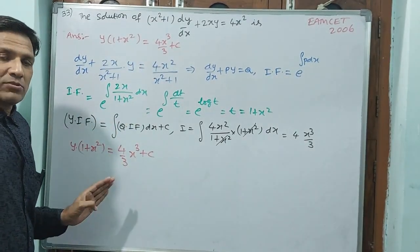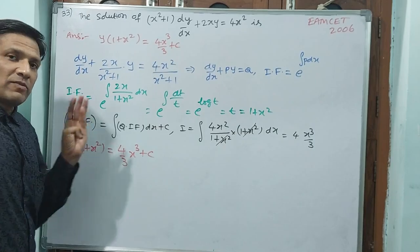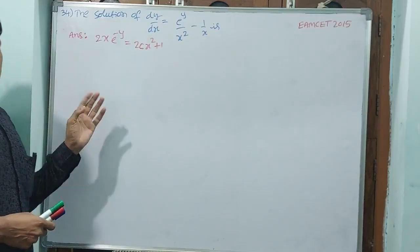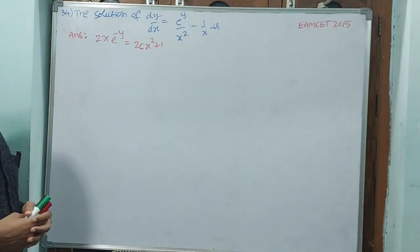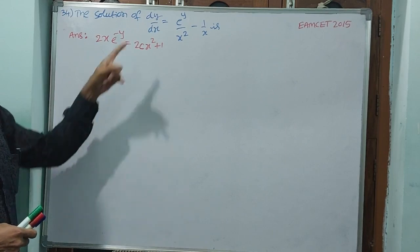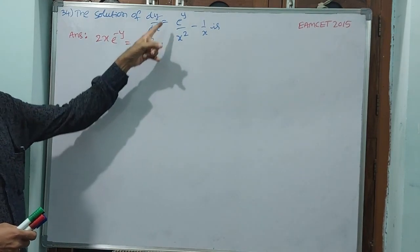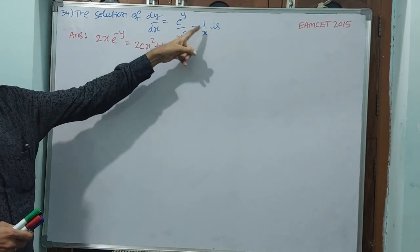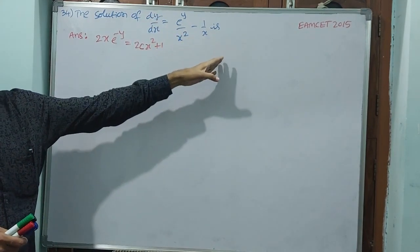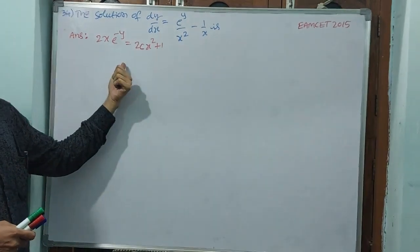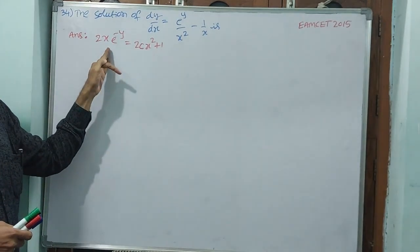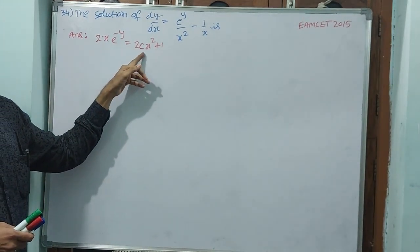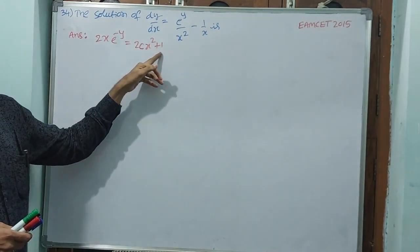Understand this question? Let us go to question number 34. The solution of dy by dx equals e power y by x squared minus 1 by x is how much? The answer is 2x times e to the power minus y equals 2Cx squared plus 1.